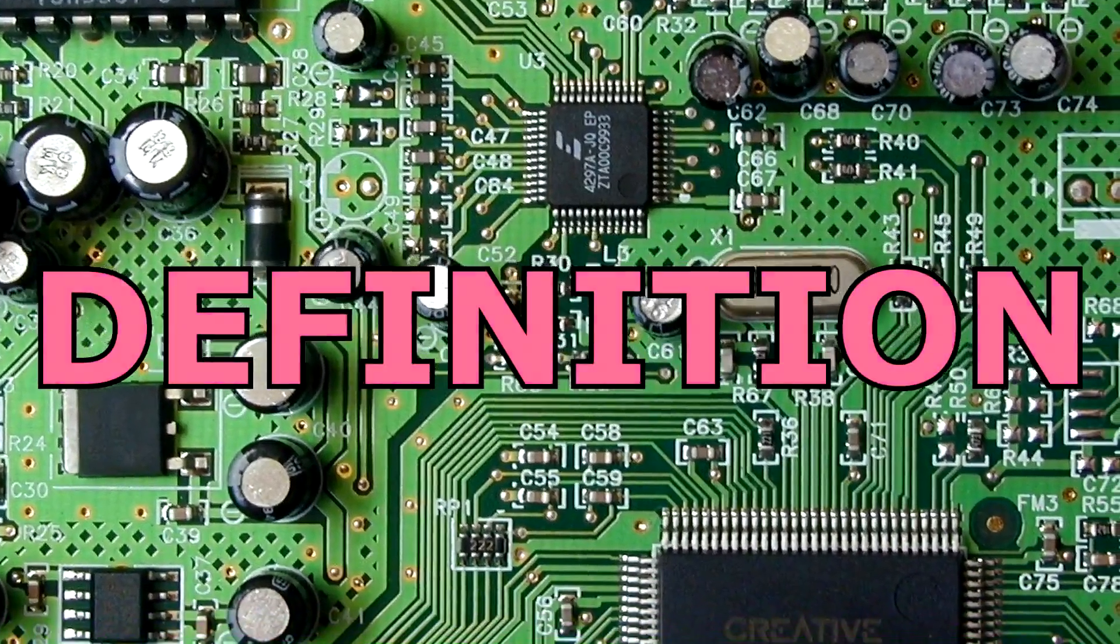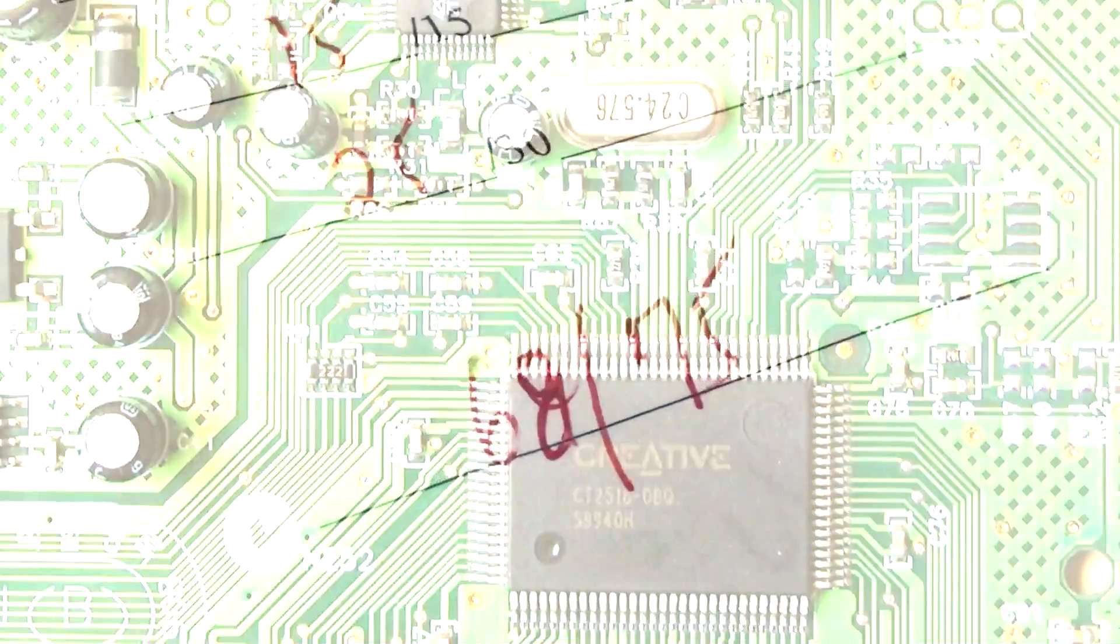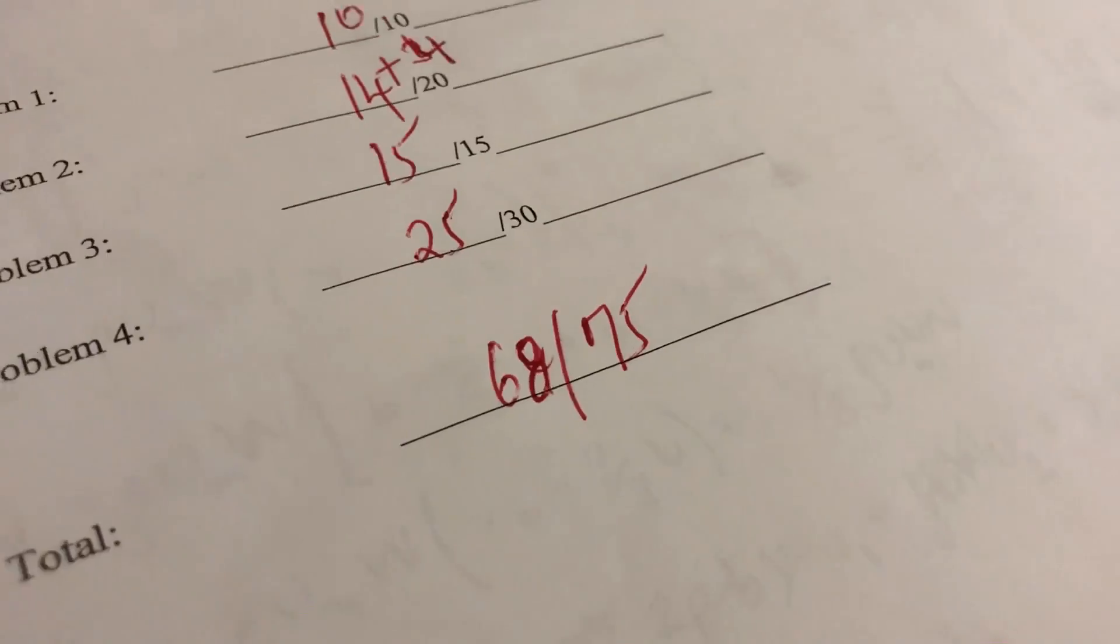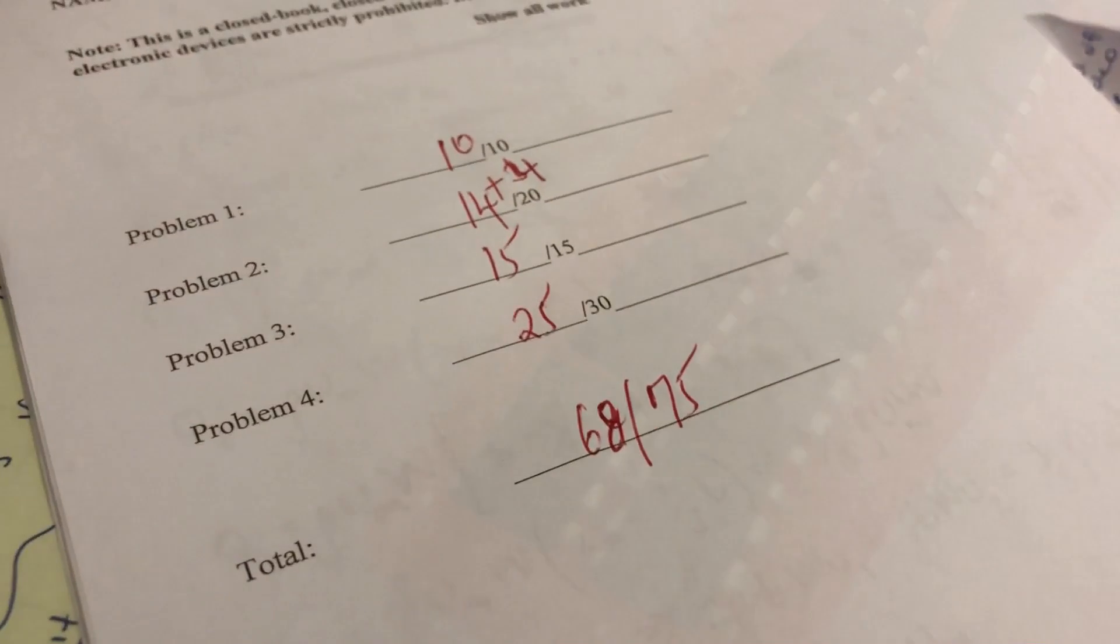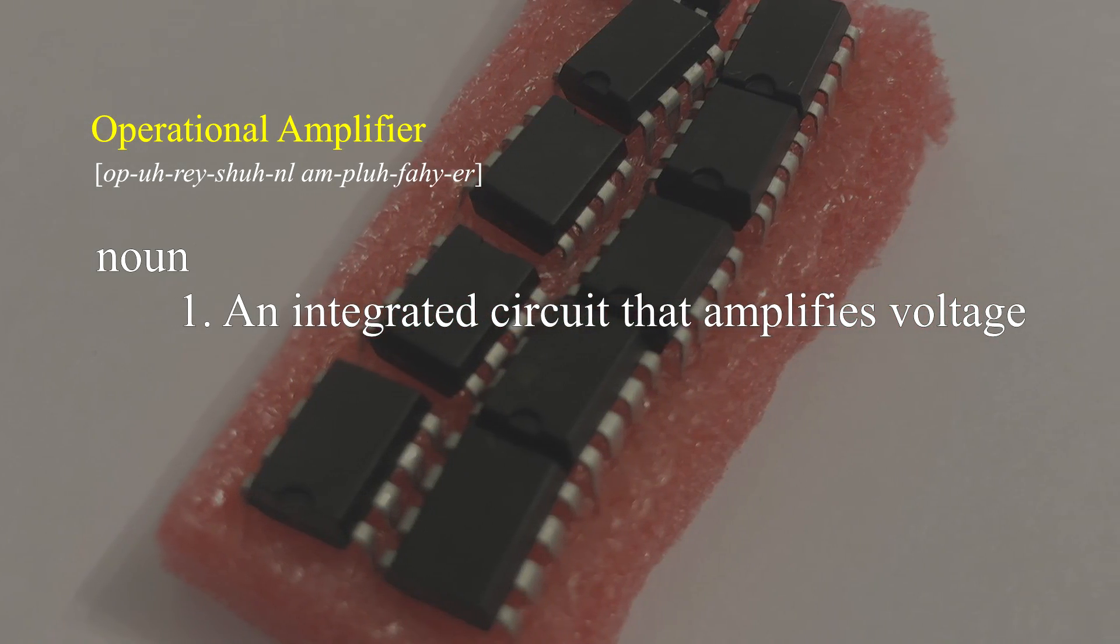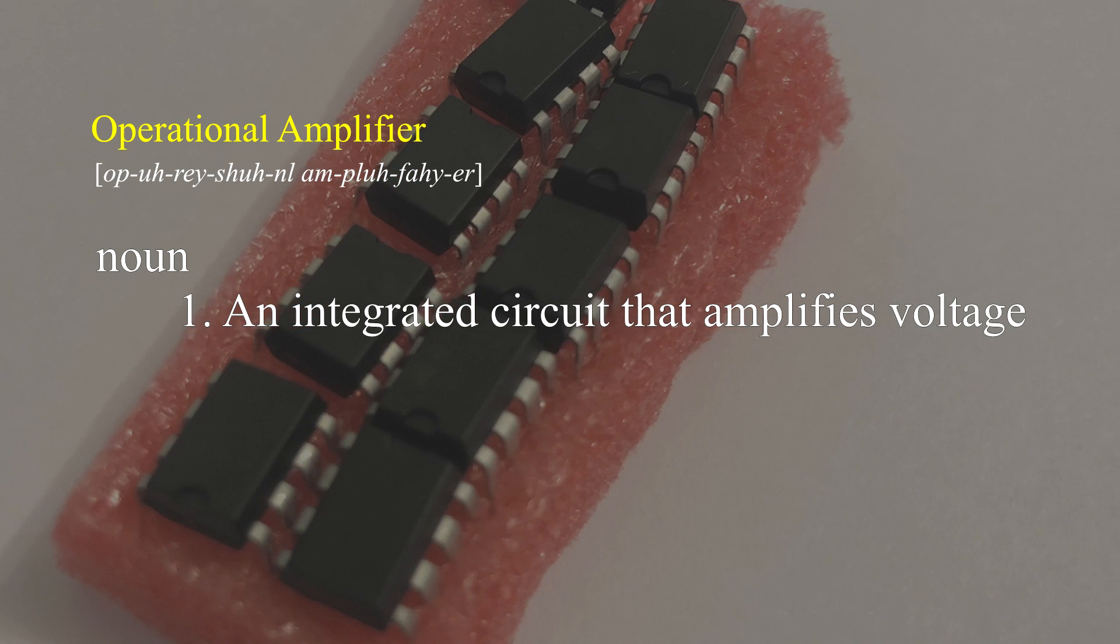Although the previous analogy may have been enough information about the op-amp to get you through the next exam, I'll share a more formal description. The op-amp is an integrated circuit that operates as a voltage amplifier. That's it. It amplifies voltage.